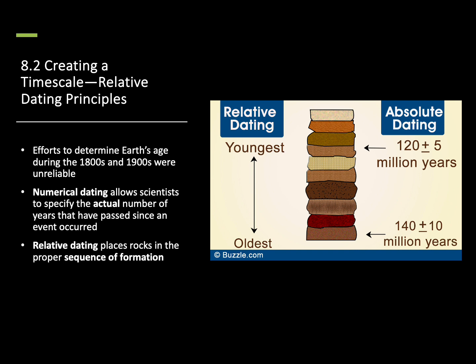Once we realized that our Earth was significantly older than 4,000 years, we didn't really have any idea how old it was. We just knew that it had to be a lot longer than 4,000 years for all of the different features to have developed on our planet. In the 1800s and 1900s, scientists tried to date the Earth, but they were really unreliable. Nowadays, we have what's called numerical, or absolute dating, where we can come up with an actual number for how old something is — we can analyze a rock and say this is exactly 4.28 billion years old.